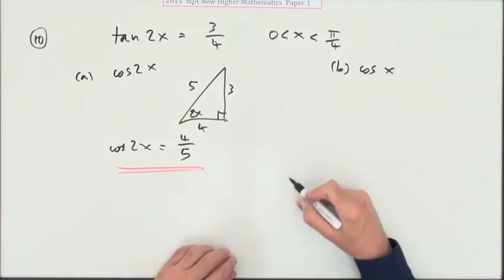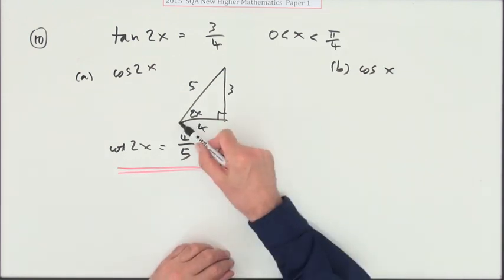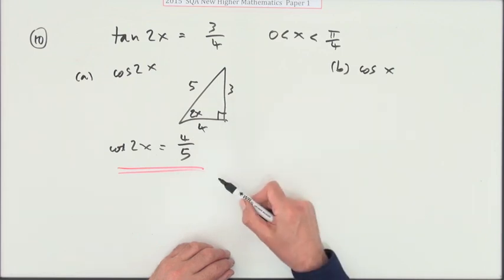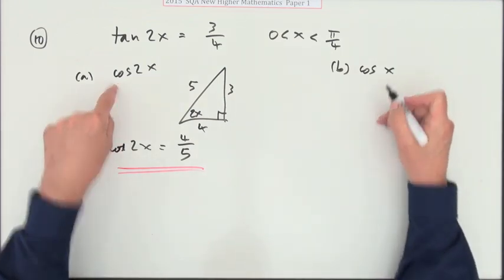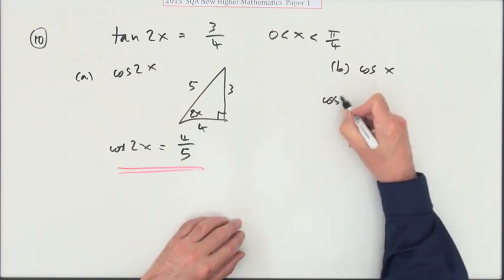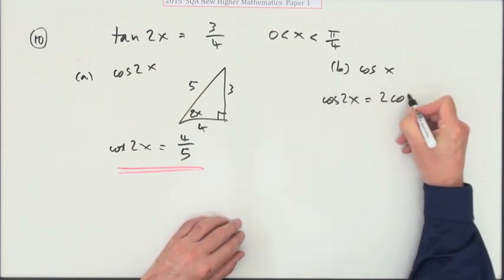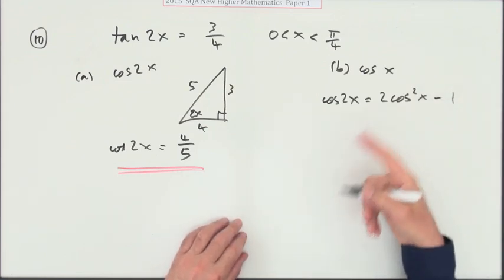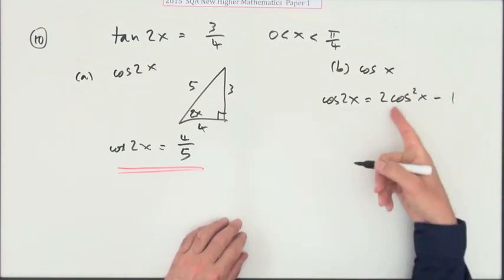Then it says, what about cos x? Well, you don't just try and half that triangle and say that'll be 1.5. No, there's a connection between cos 2x and cos x: cos 2x is 2 cos² x minus 1. So you can find cos x from this.